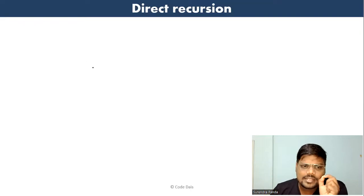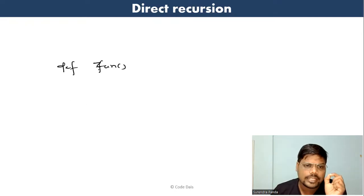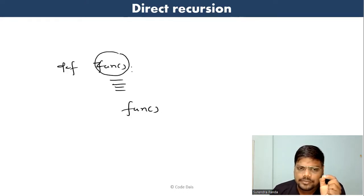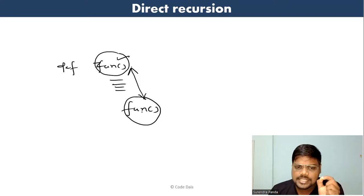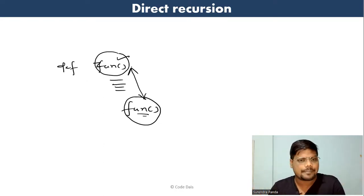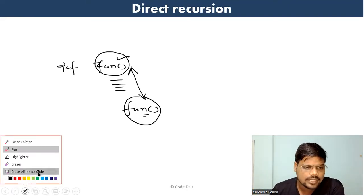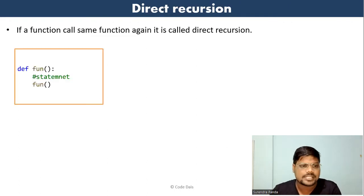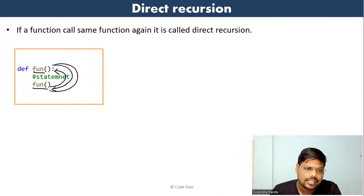What is direct recursion? Direct recursion means if you create a function — say def fun — and inside that function body you call the same function again, that is called direct recursion. So if a function calls the same function again, it is called direct recursion.